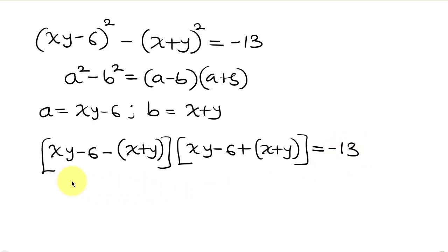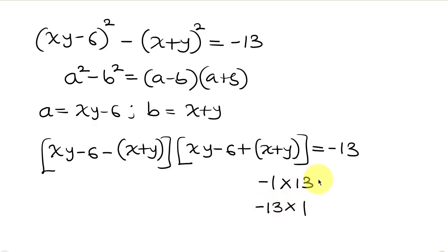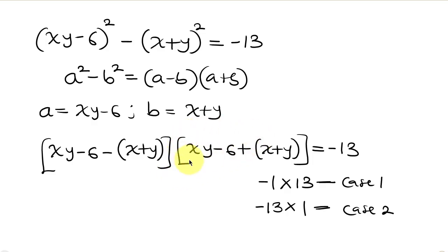So we have two factors which multiply to give -13. Our next step will be to write out the factors of -13. We know that -13 equals (-1) × 13, and also (-13) × 1. We'll use these two to solve — we call this Case 1 and Case 2. Note that the factor carrying a plus is bigger, so it will be associated with the bigger factor.